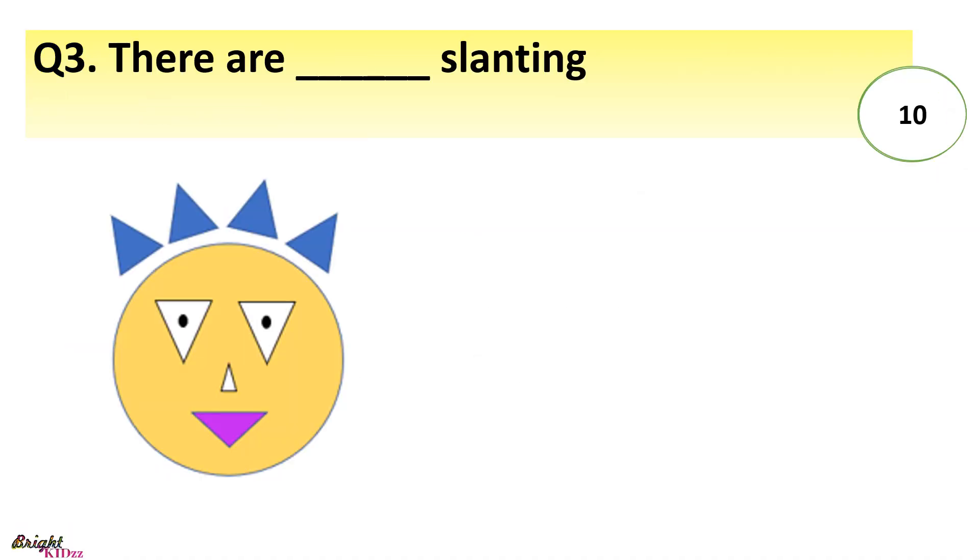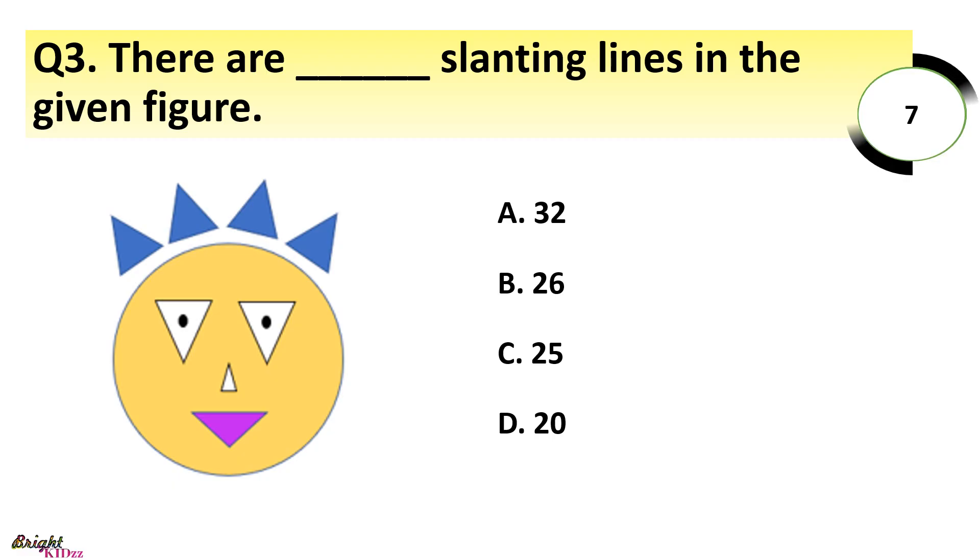There are dash slanting lines in the given figure. A: 32, B: 26, C: 25, D: 20. Answer: 20. Here we can count 1, 2, 3, 4, 5, 6, 7, 8, 9, 10, 11, 12, 13, 14, 15, 16, 17, 18, 19, 20.